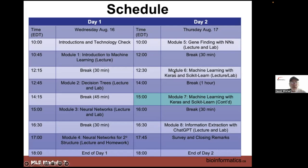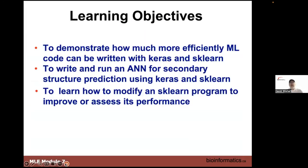Today we're continuing with what we started just before the break. This is Module 7 and we're going to continue with Keras and scikit-learn. We originally applied things to the iris problem, which isn't really a bioinformatics problem, so this time we're going to apply it to a real bioinformatics problem — specifically for secondary structure prediction.